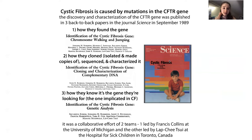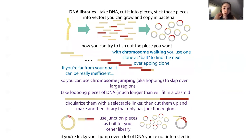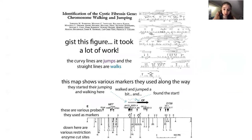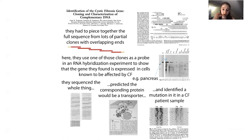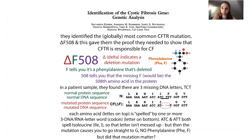One team was led by Francis Collins at the University of Michigan and the other by Lapshi Tsui at the Hospital for Sick Children in Toronto, Canada. They had to find the gene, clone it, sequence it, characterize it, and confirm it was the one they were looking for. They made DNA libraries with different regions of the DNA from these cells and had to find markers to map where the gene was. Once they got close, they used probes — specific labeled RNAs expressed in cells known to be affected by cystic fibrosis — to see what regions might be functionally important, comparing patient samples to samples from healthy relatives.